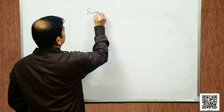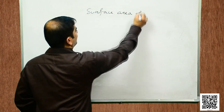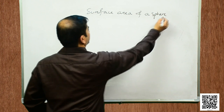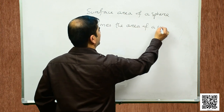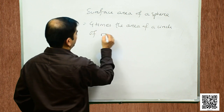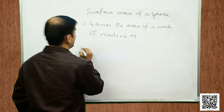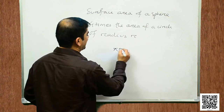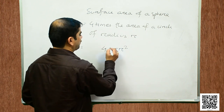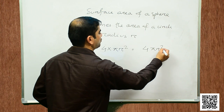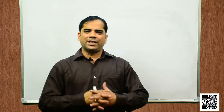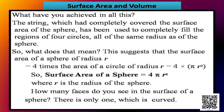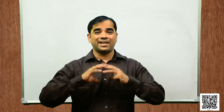So, students, the surface area of a sphere of radius r: the area of a circle is π r², so 4 times that is 4 π r², where r is the radius of the sphere. How many faces do you see in the surface of a sphere? There is only one, which is curved. A sphere has a curved surface.